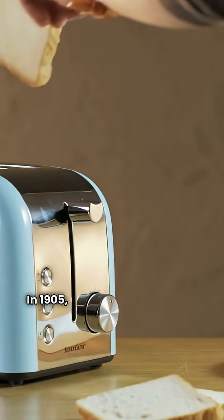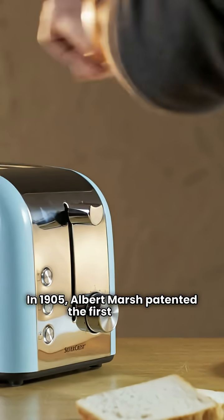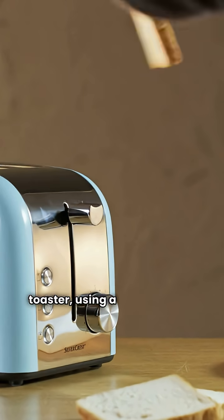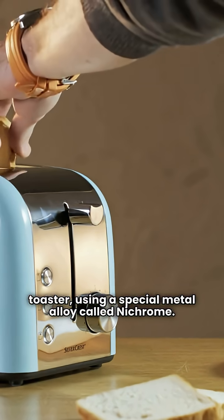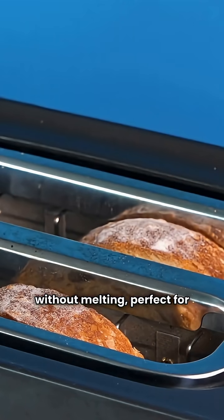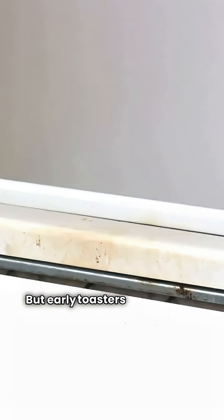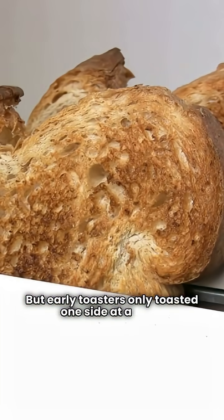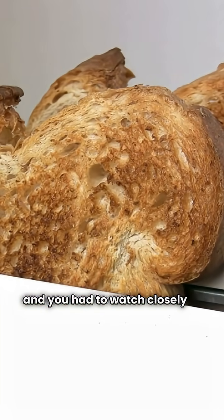In 1905, Albert Marsh patented the first electric toaster using a special metal alloy called nichrome. This alloy could heat up quickly without melting, perfect for toasting bread. But early toasters only toasted one side at a time, and you had to watch closely to avoid burning.